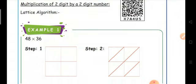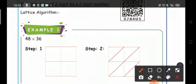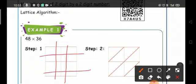First we will see one example: 48 times 36. Step 1: Draw a grid that has as many columns as the multiplicand and as many rows as the multiplier.